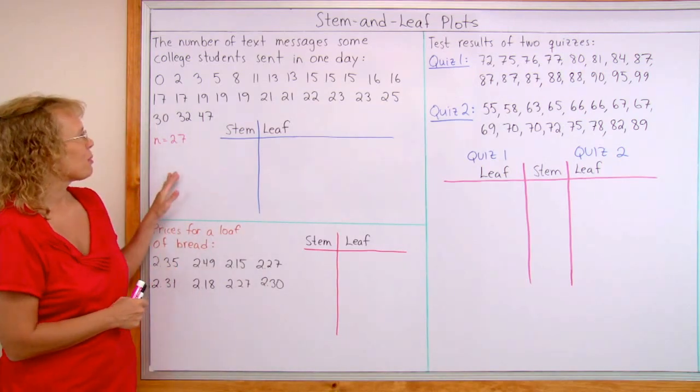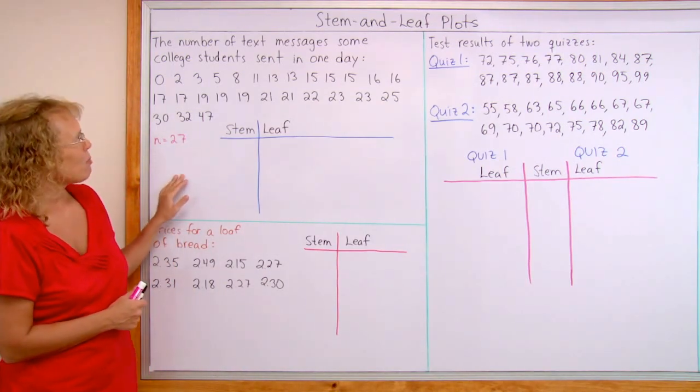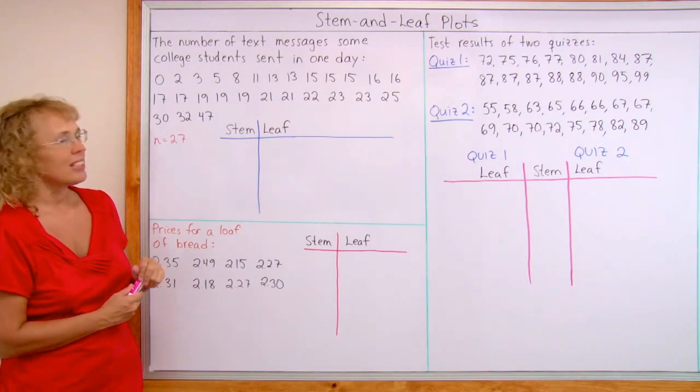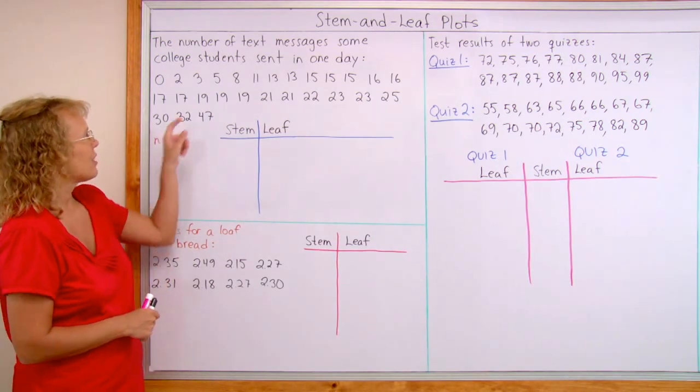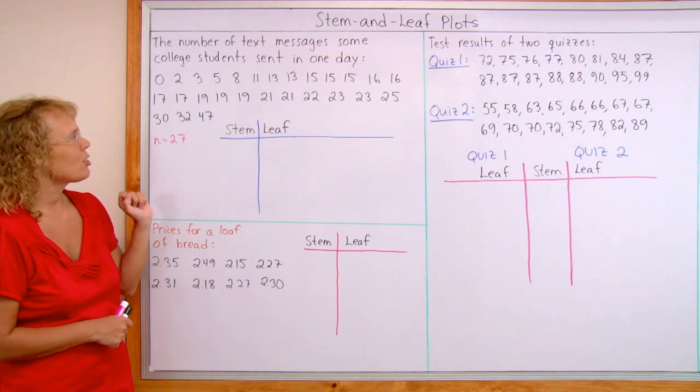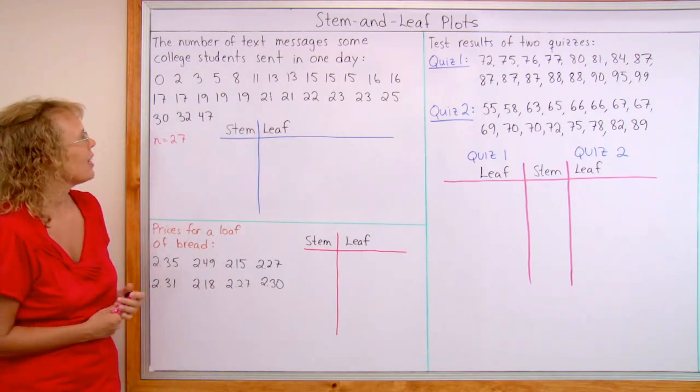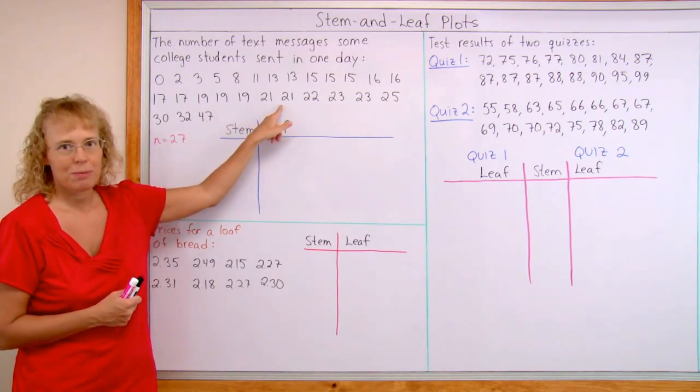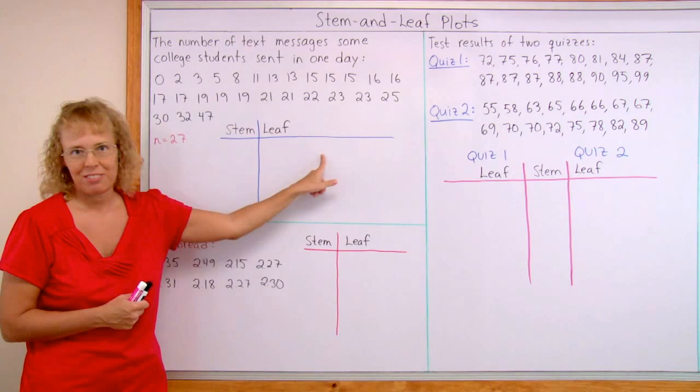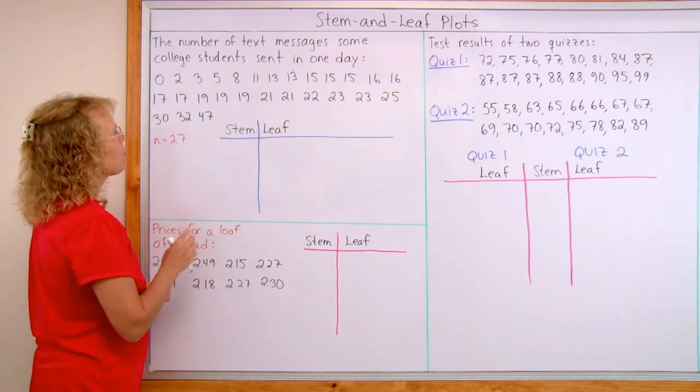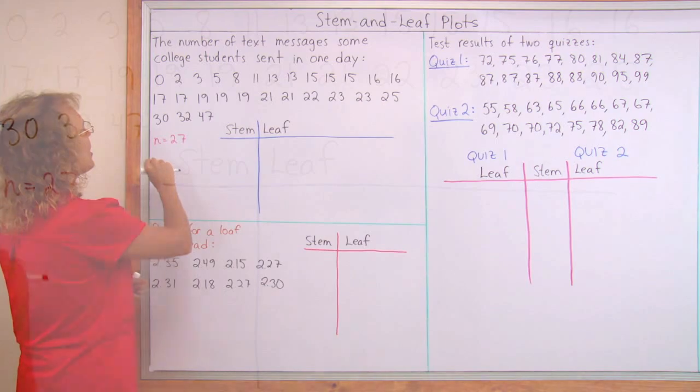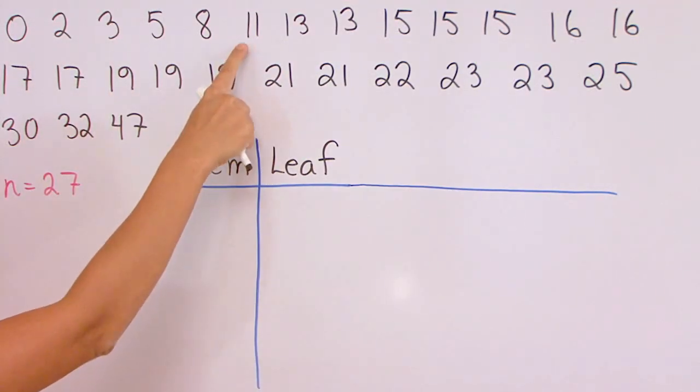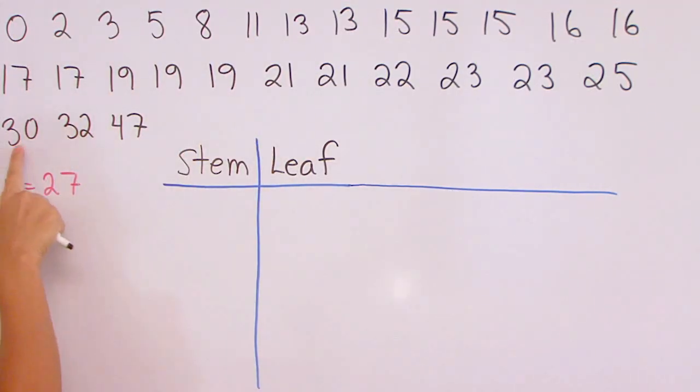Let us use this example to show how it works: the number of text messages some college students sent in one day. So for example, one student sent three messages and another student sent 21 messages and so on. The stems go here and they will be the tens digits of these numbers, and then the ones digits will be the leaves. I'll check first what kind of tens digits do I have here in my data. There's zero tens and one ten, two and three and four. So for stems I need to write zero, one, two, three, and four.